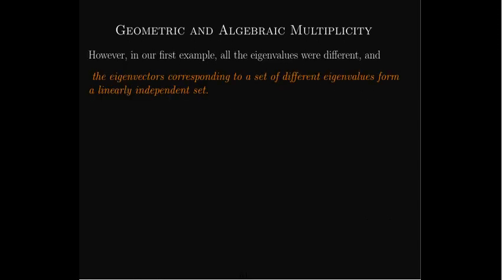But in our first example, we found that the eigenvectors corresponding to eigenvalues which were all different from each other formed a linearly independent set. That's such an important idea. Let's see if we can come up with an explanation.